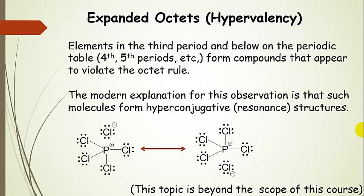We will see that elements in the third period and below on the periodic table, so the fourth and fifth periods, form compounds that appear to violate the octet rule. The modern explanation for this is that they actually form hyperconjugative resonance structures.